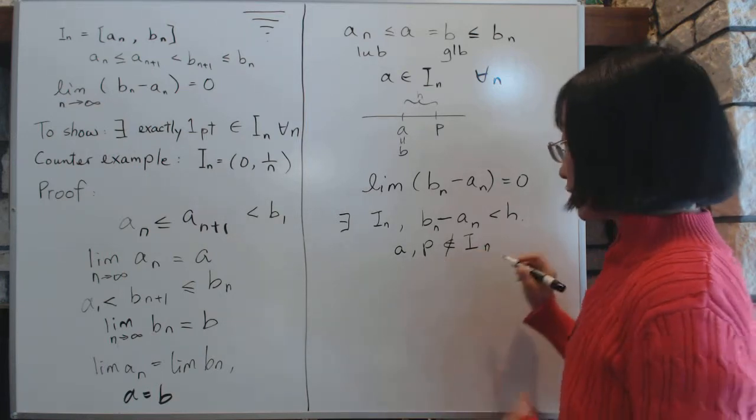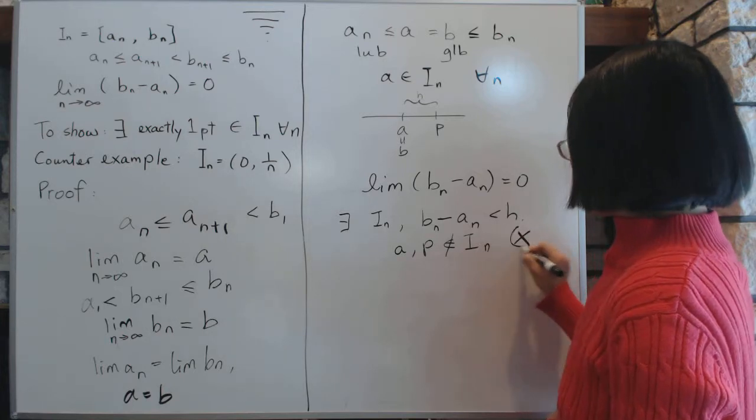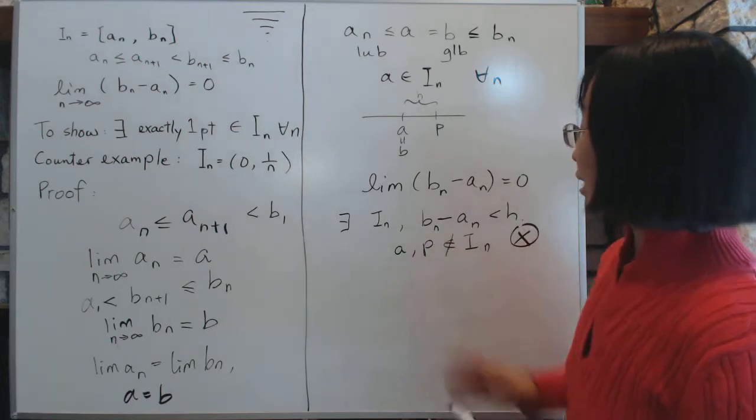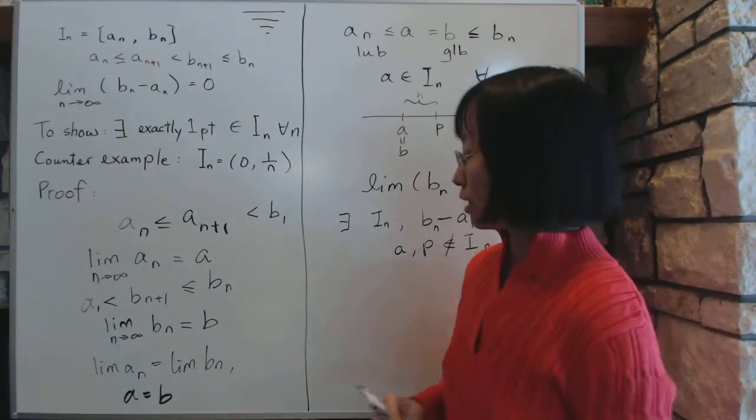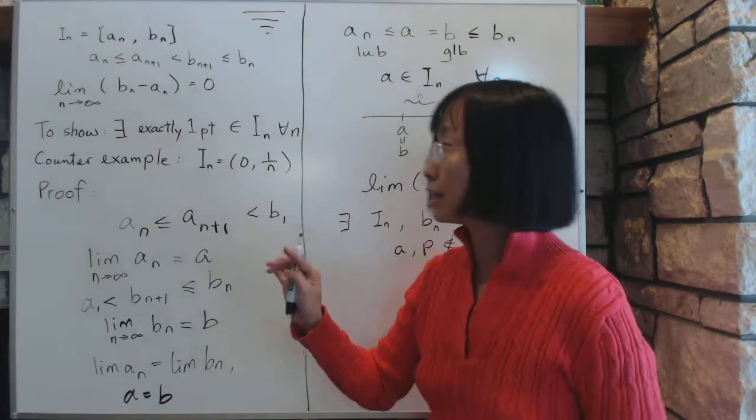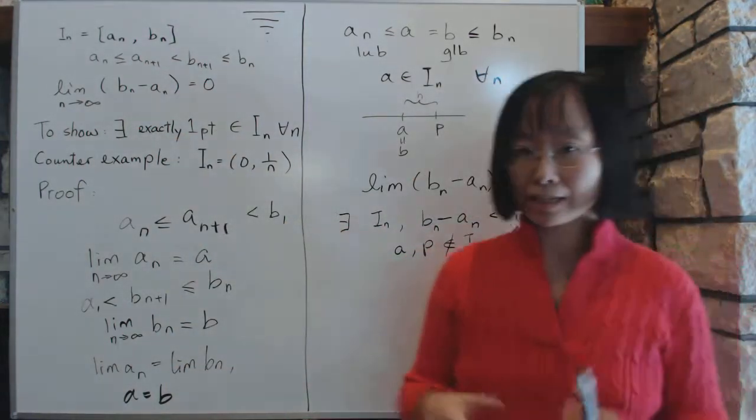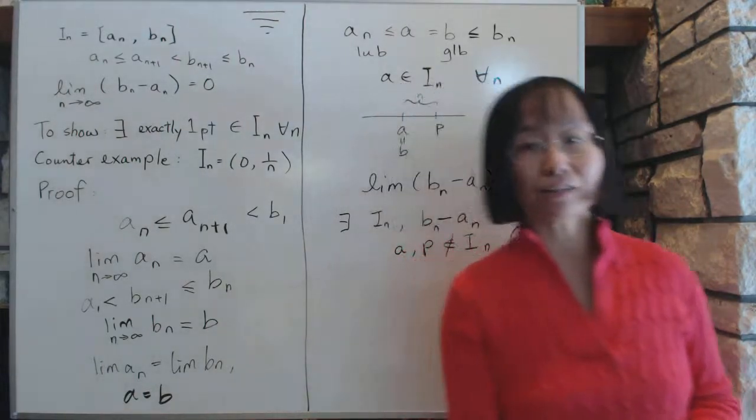Cannot both belong to I_n, which means that, and that's a contradiction because you just assume that it belongs there. So then, so that proves that a is a unique point and there exists exactly one point that belongs to all the intervals and that concludes the proof.